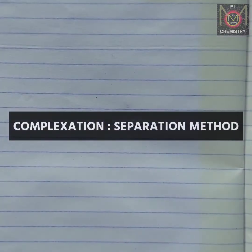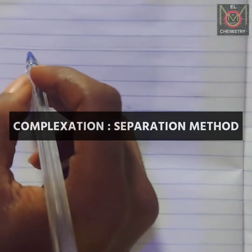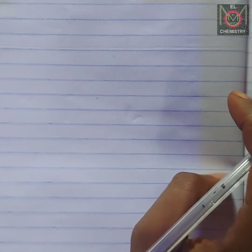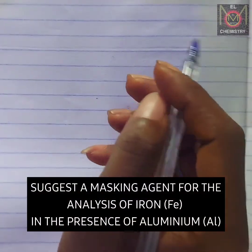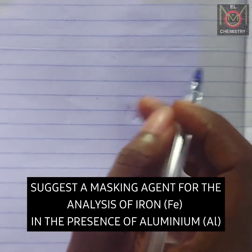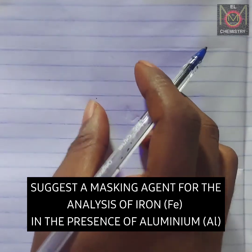Welcome everybody to my channel. Today I'll be answering a particular question that's on demand so you get to have a way to solve other related problems. So look at this question: suggest a masking agent for the analysis of iron in the presence of aluminum.